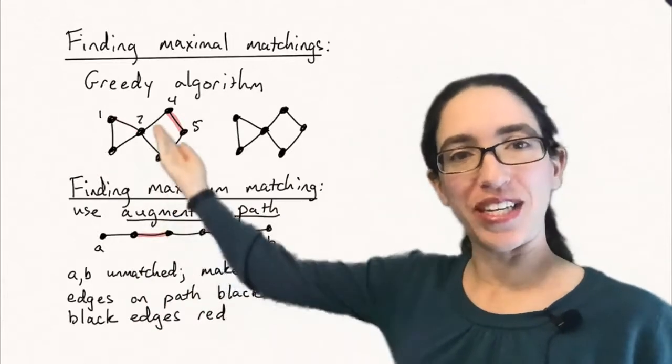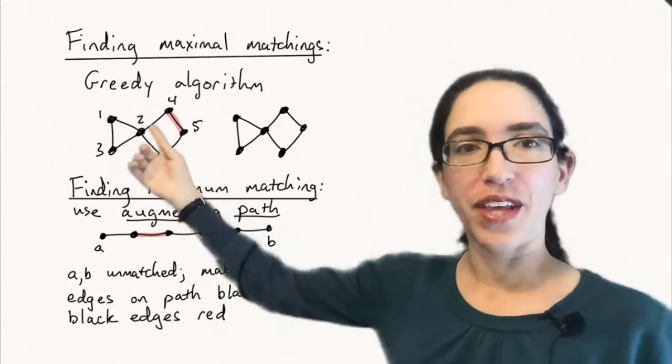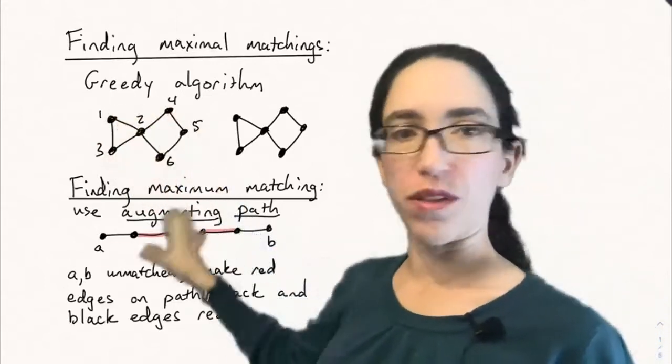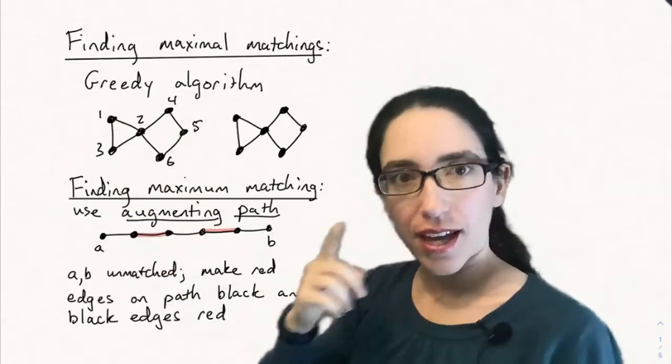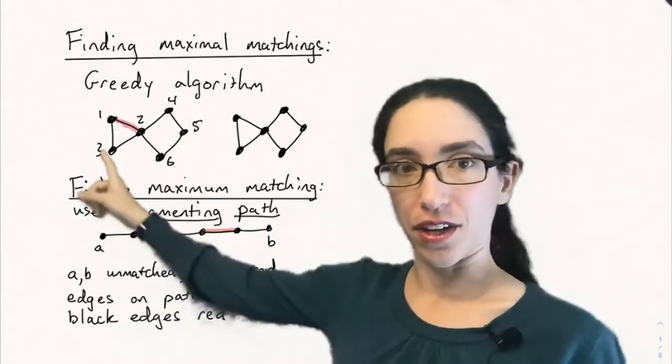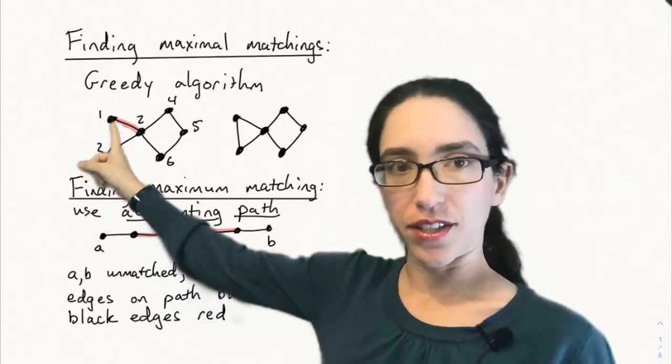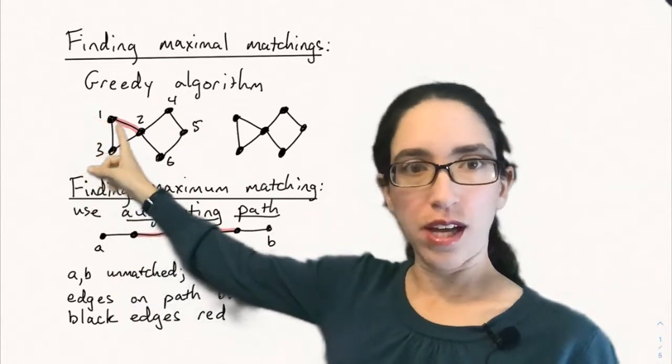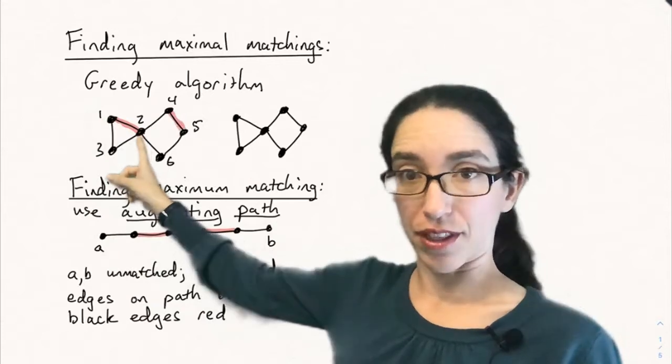So what we do instead is we number the vertices in some way. Number them one through n, one through six in this case. And you can tell the computer, as your first edge that you pick in the greedy algorithm, choose the edge adjacent to the smallest numbered vertex, one, and then that's connected to the smallest possible vertex after that.